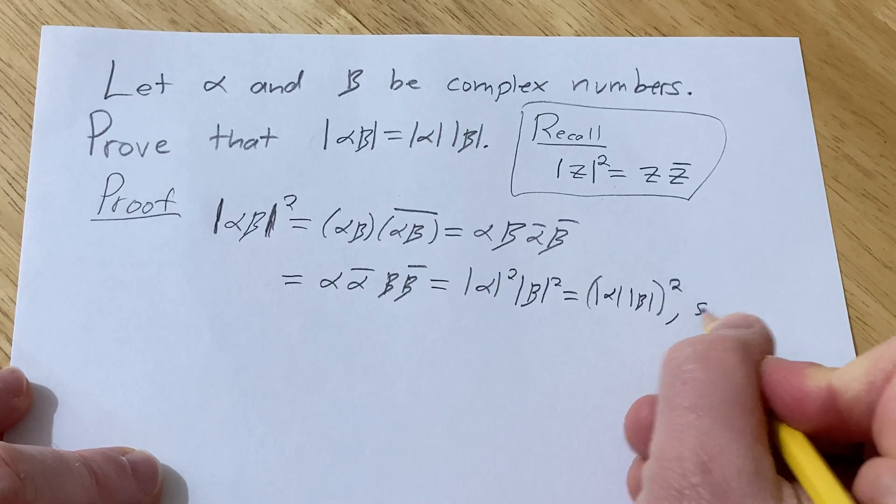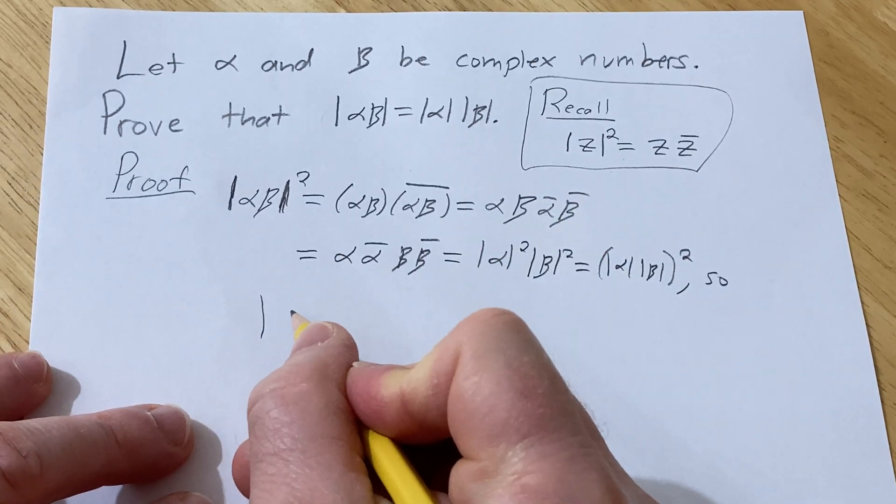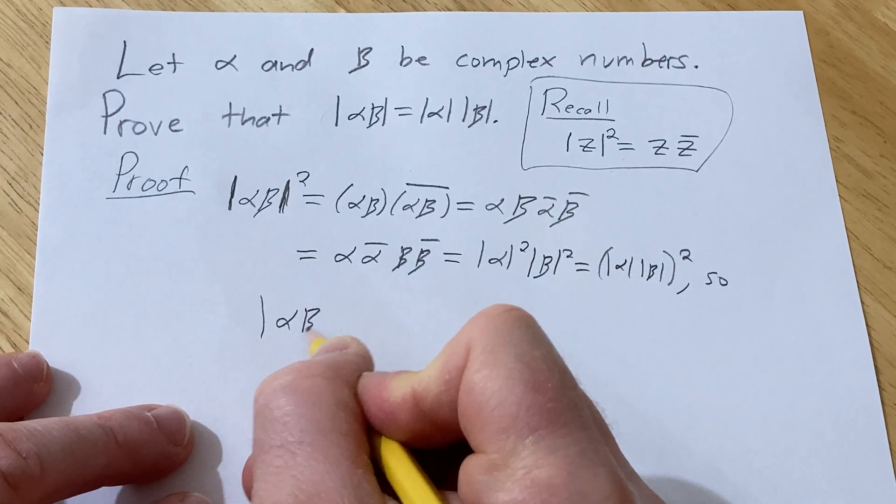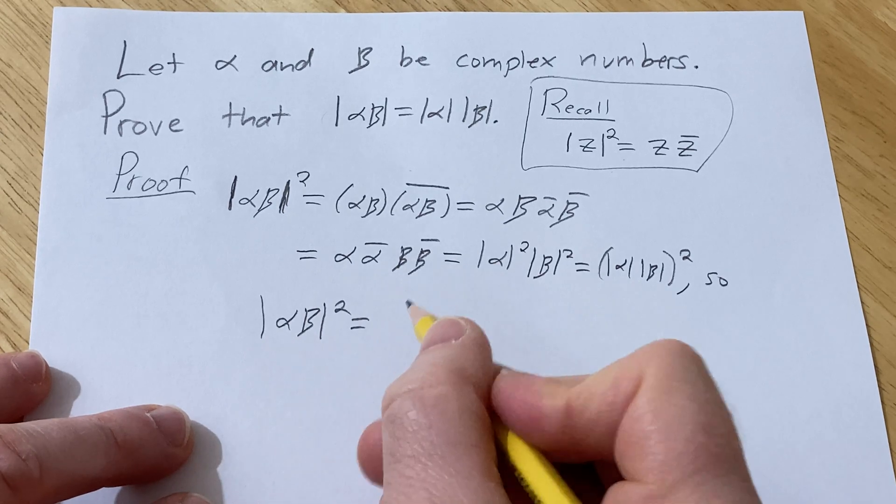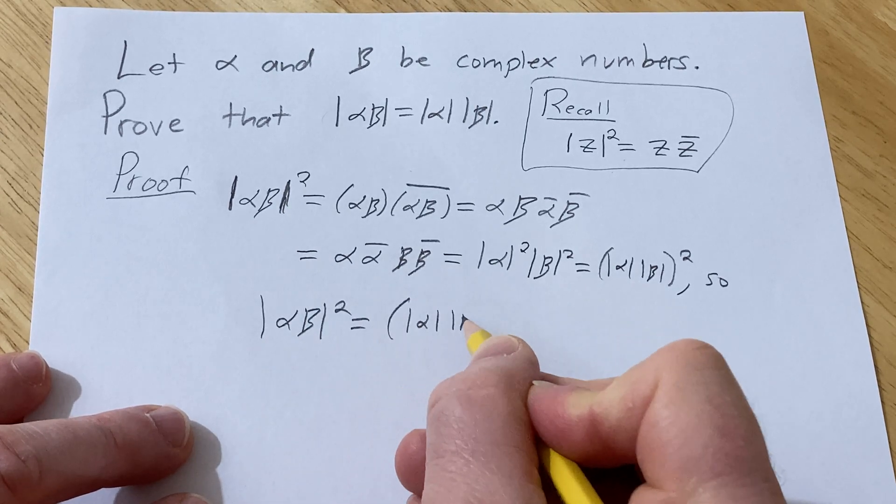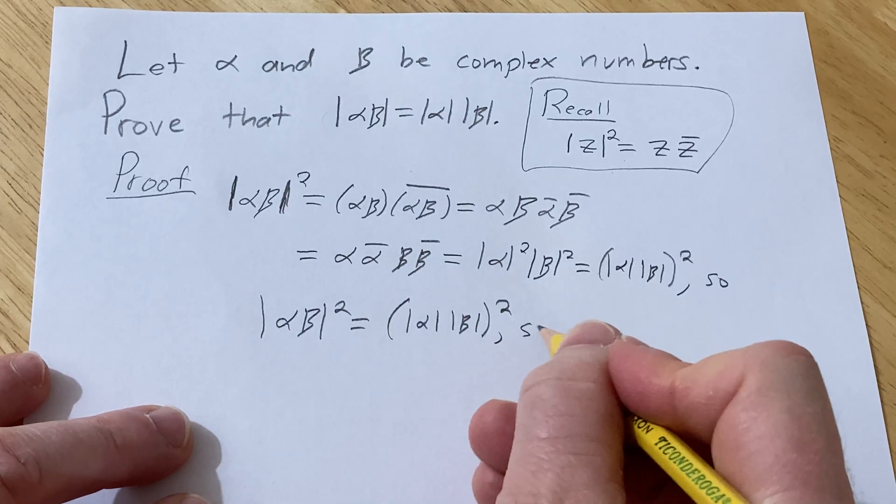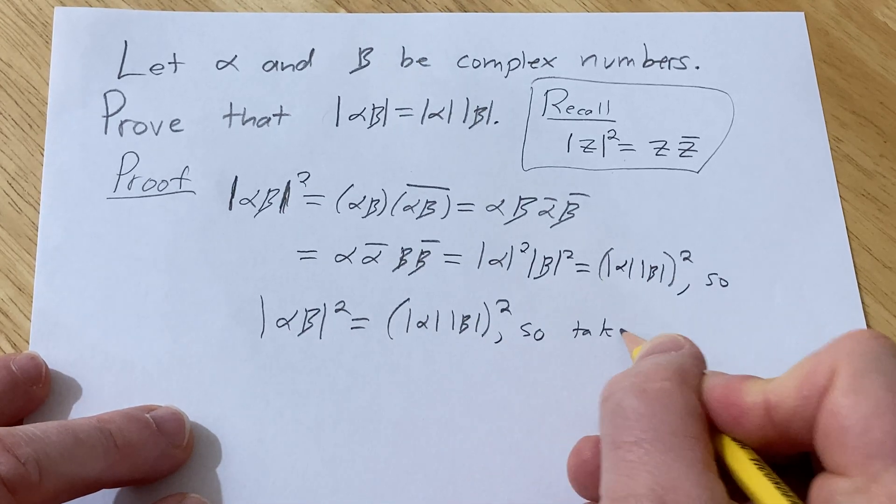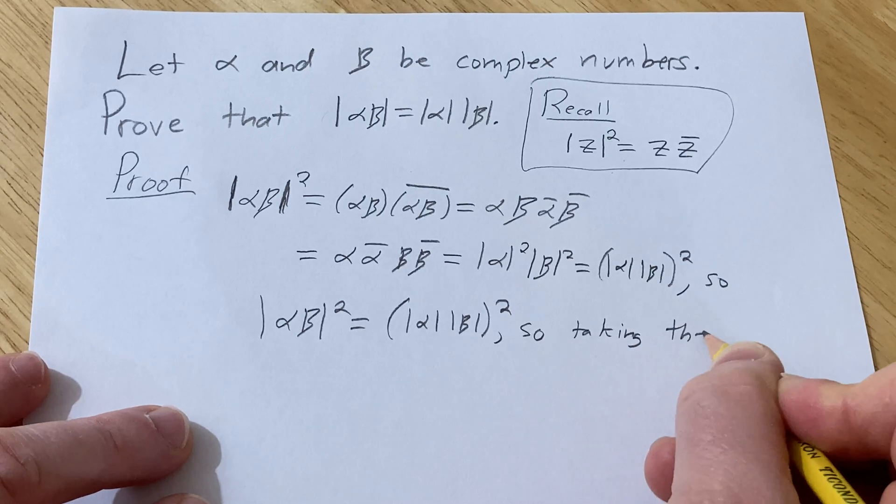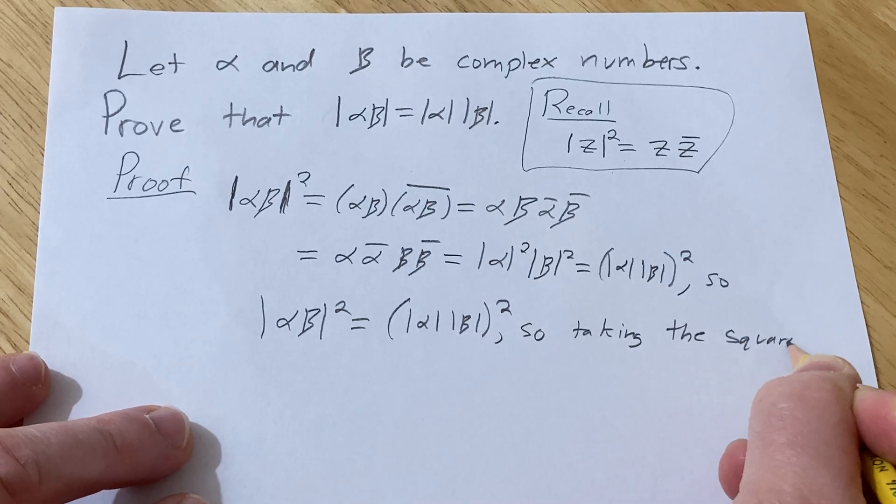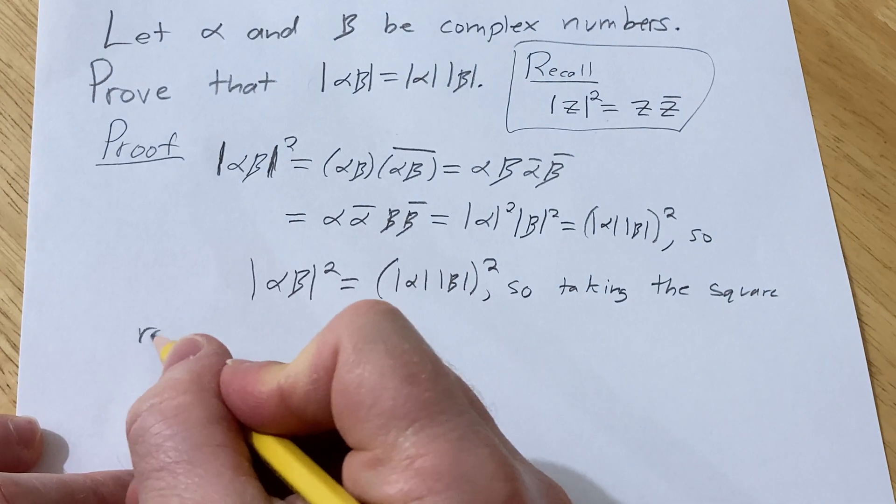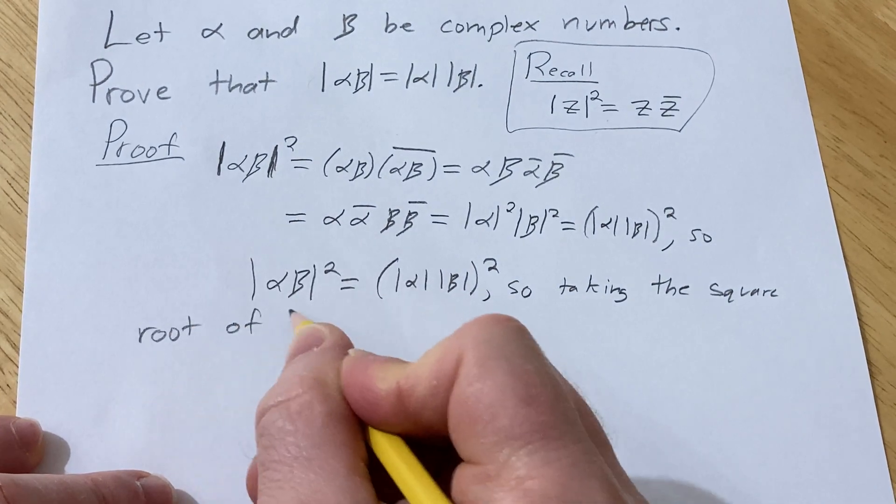So now we have that the absolute value of the complex number alpha beta squared is equal to this here. So taking the square root of both sides,